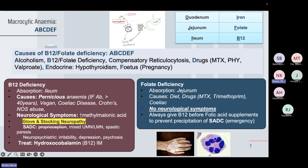B12 and folate deficiency causes megaloblastic anemia. Since the nucleus of the red blood cell isn't working, this affects all cells in the body — skin cells, neural cells — because they also lack B12 and folate. In neutrophils, B12 and folate deficiency causes hypersegmented nuclei because they're not maturing either. That's why it's called megaloblastic macrocytic anemia.